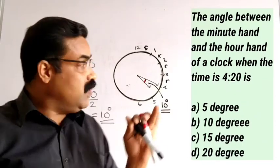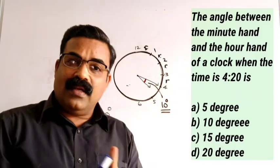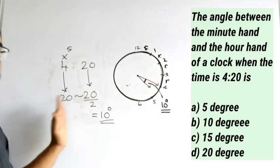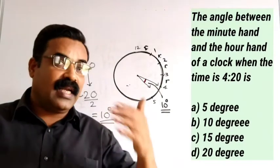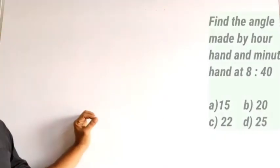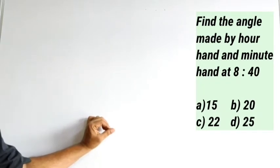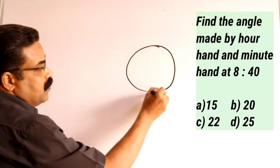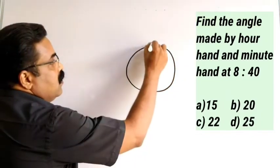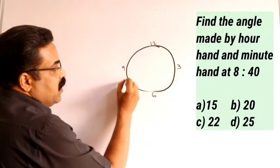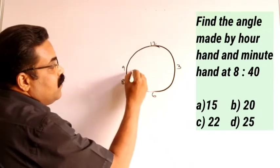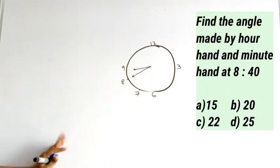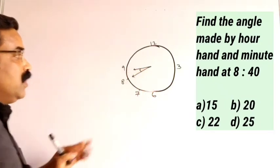This way you can find out the angle between minute hand and hour hand. Now every question will not give the same number — there will be some difference. So we go to the second type of question. Here is your question: find the angle made by the hour hand and minute hand at time 8:40. So the time is 8:40. Let us draw that on the clock.